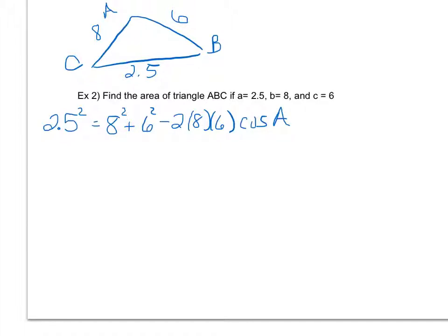I'll subtract 8² and 6² first, following my solving process from Algebra 1. Then I'm going to divide by -2(8)(6), because once I get cosine A by itself, I can use the inverse to solve for my angle measure.